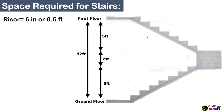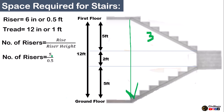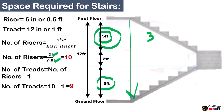Coming to the last flight, flight number 3, the calculations are the same as flight number 1 since the rise is also 5 feet. The number of risers will be 5 divided by 0.5, which equals 10 risers. And since treads are always 1 less than risers, we get 9 treads. So for flight number 1 and flight number 3, the number of risers and treads are the same because the vertical distance is the same.